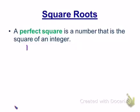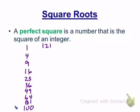1 squared is 1, 2 squared is 4, 3 squared is 9, 4 squared is 16, 5 squared is 25, 6 squared is 36, 7 squared is 49, 8 squared is 64, 81 is 9 squared, and 100 is 10 squared.